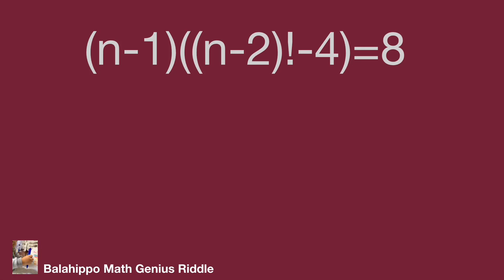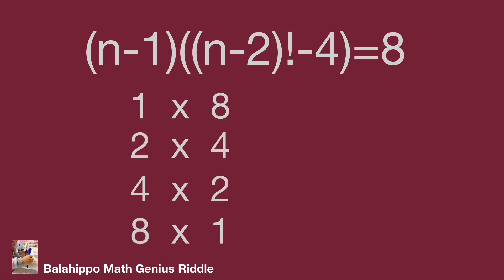Since n is a positive integer, the possible factor pairs for (n minus 1) and [(n minus 2) factorial minus 4] that multiply to 8 are: 1 times 8, 2 times 4, 4 times 2, and 8 times 1.